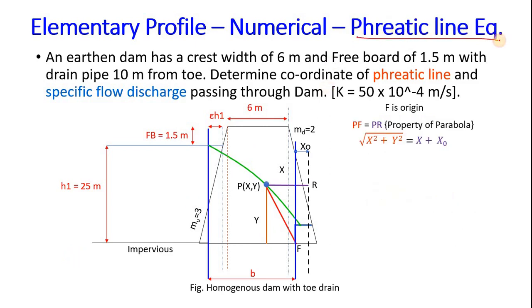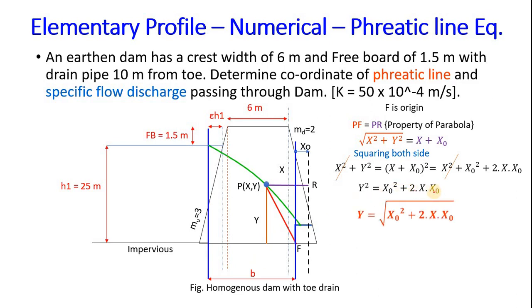Now we have to find the phreatic line equation. Squaring both sides, we will get these equations. Now x² and x² are canceled, so the remaining would be y² equals x₀² plus 2x times x₀. Now when you take square root on both sides you will get y equals square root of x₀² plus 2x times x₀.